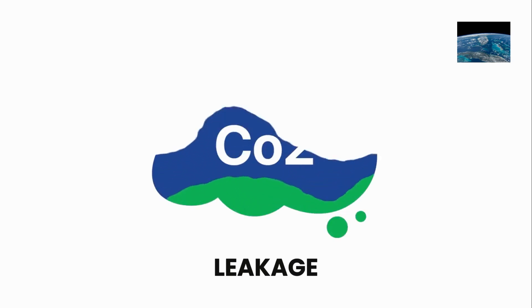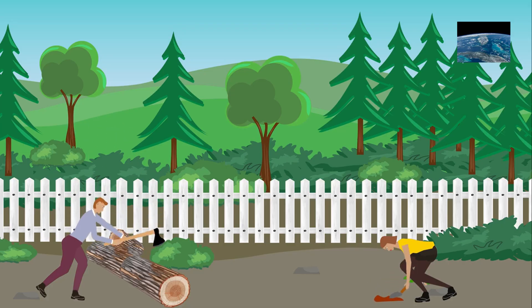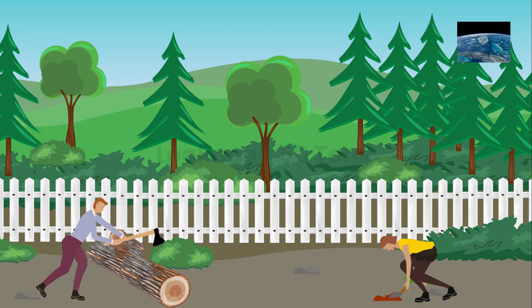But before we celebrate, there's a catch: leakage. Leakage happens when our project accidentally causes emissions somewhere else. For example, if this land was used for farming before, and now those farmers clear another forest to keep growing crops, that deforestation releases CO2. Let's say that adds up to 50 tons of emissions.